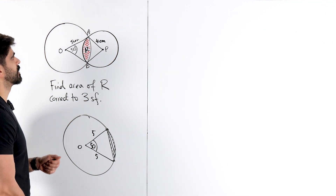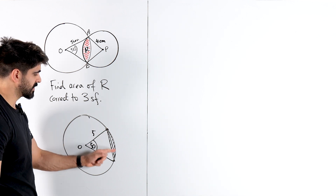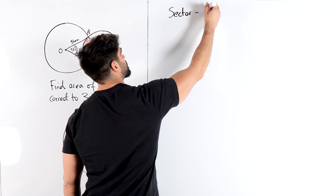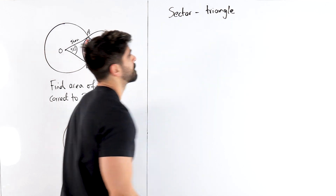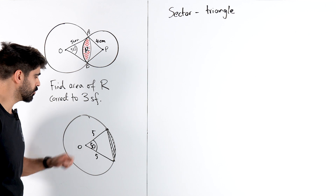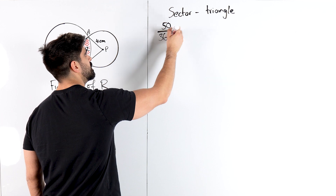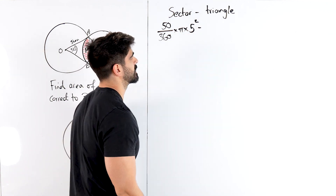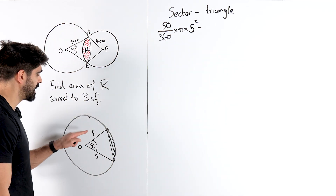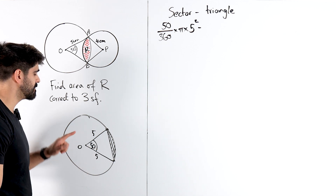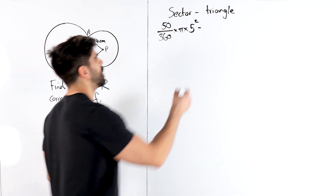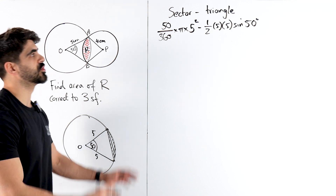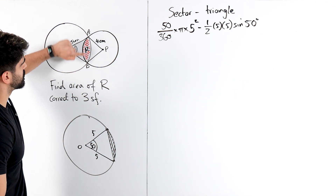How do we do that? To find a segment area, we're going to do sector minus triangle. What is the area of a sector? It's what fraction is this angle relative to 360 — so 50 degrees out of 360, multiplied by pi times the radius squared. The radius here is five, so five squared. Then minus the triangle: half a·b·sin(C). Your a and b are both five, so five times five equals five squared. We type all of that in — that is that portion of R.